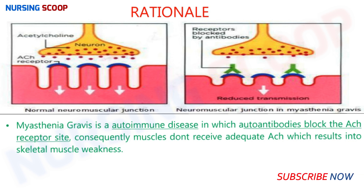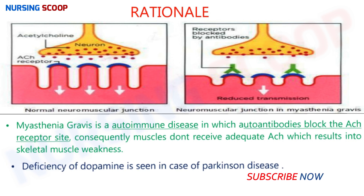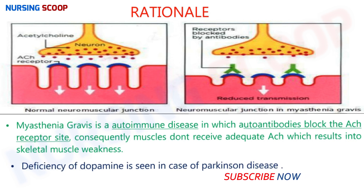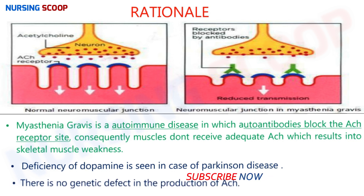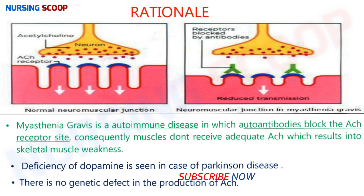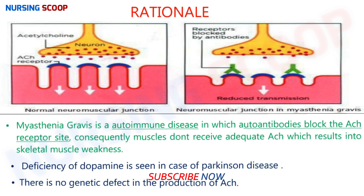Myasthenia gravis is an autoimmune disease. Deficiency of dopamine is not seen in myasthenia gravis — it is related to Parkinson's disease. There is no genetic defect in the production of acetylcholine, so those two options are incorrect.